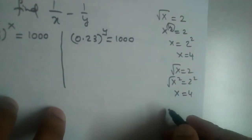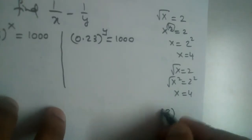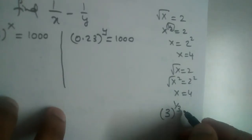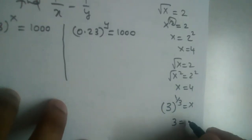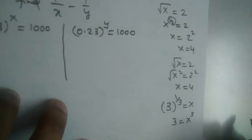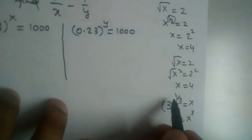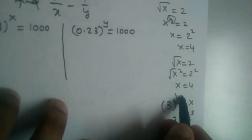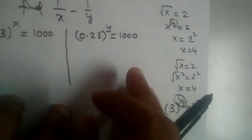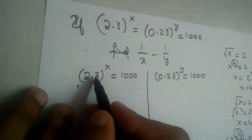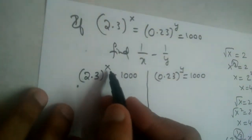Similarly, if we have x to the power 1/3, sending 1/3 to the other side makes it x cubed. The key rule is: if a power goes to the other side, it becomes the reciprocal. So here we have 2.3 whole power x equals 1000.